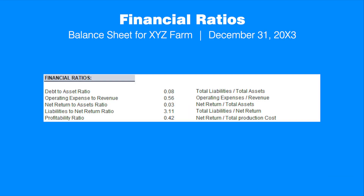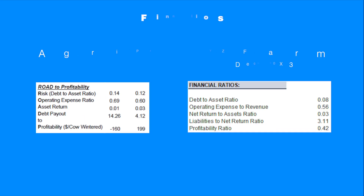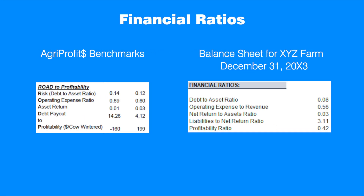AgriProfits provides five ratios that address different financial aspects of the business. Financial ratios can be analyzed using the trend analysis method, as well as the comparative analysis method. The latter compares some measures of interest with industry benchmarks or other reference points. In this video, we will compare the balance sheet financial ratios with the AgriProfits financial performance indicators published every year.